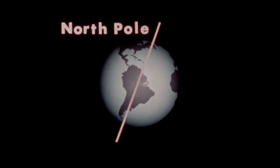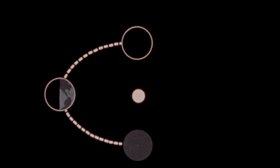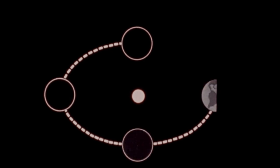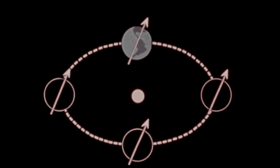For one thing, the Earth turns or rotates on an imaginary line called an axis. The north end of the Earth's axis is called the north pole, and the south end is called the south pole. Our Earth also revolves in a regular path or orbit around the sun. As we move from one position to another along this orbit, the axis of the Earth is not straight up and down — it's tilted, and that tilt is part of the cause of the changing seasons.